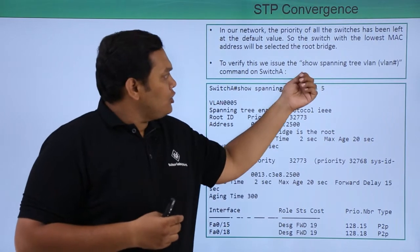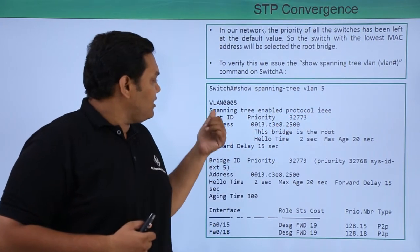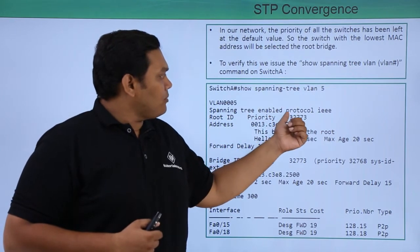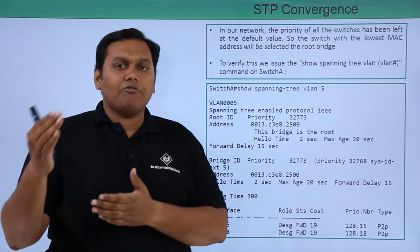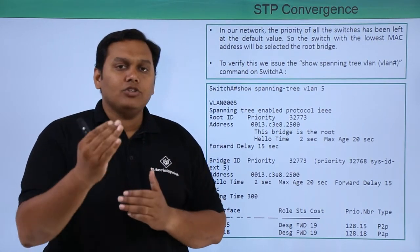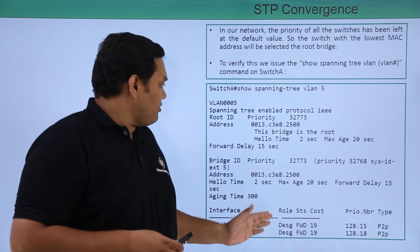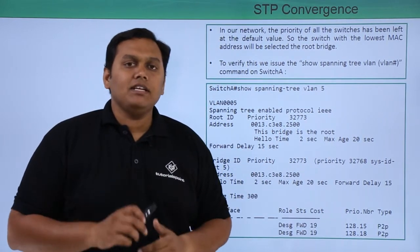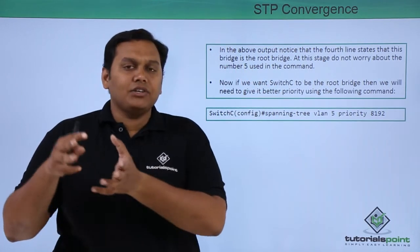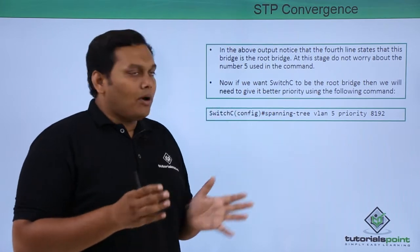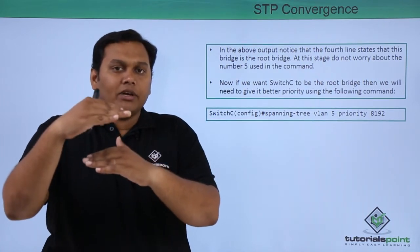To verify the root bridge, we use the command 'show spanning tree VLAN 5'. The output shows VLAN 0005, spanning tree enabled with protocol IEEE, and a root priority of 32773. The root ID and MAC address are clearly given. The fourth line of the output states this is the root bridge, and the forward delay is 15 seconds.